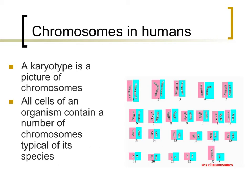Chromosome pairs in humans are numbered 1 through 22. The last pair, as this image shows, are referred to as sex chromosomes. The karyotype on this slide would belong to a male, as this individual has one X and one Y chromosome.